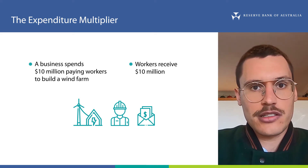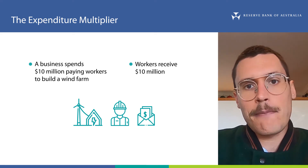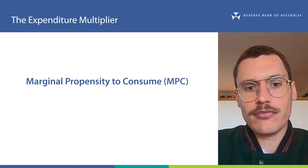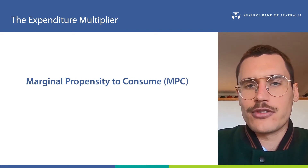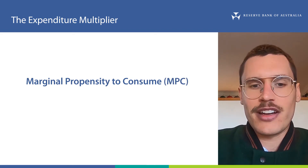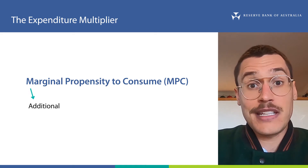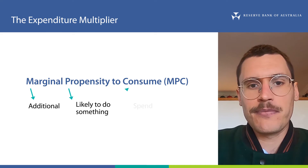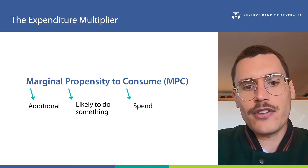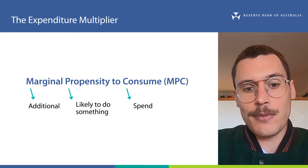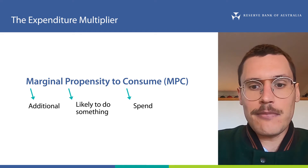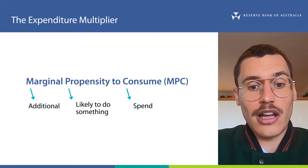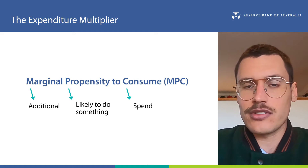The share of the money that the workers spend is called their marginal propensity to consume, or MPC. This term's quite a mouthful, so let's simplify it. The M for marginal means additional, the P for propensity means likely to do something, and the C for consume in this instance means to spend. So basically, the MPC tells us the additional dollars that are likely to be spent when some money is received.